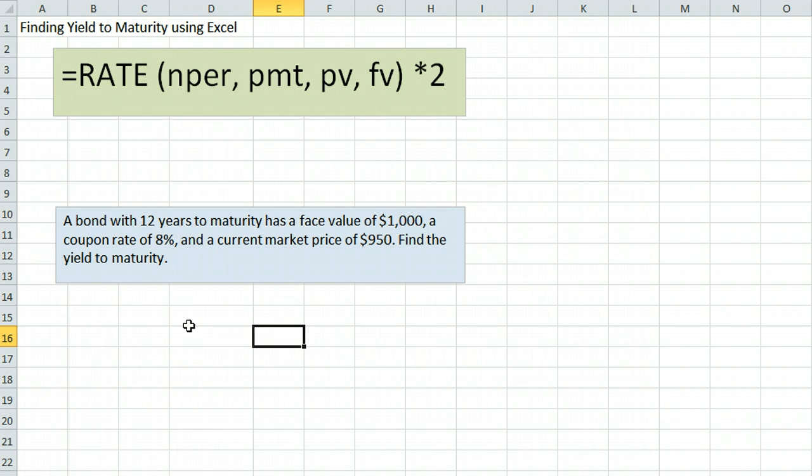This video demonstrates how to find the yield to maturity on a bond using Excel. We are going to use the Excel formula equals RATE with some information here and multiplication by two.